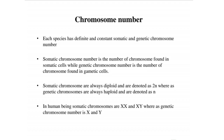Somatic chromosome number is the number of chromosomes found in somatic cells. Somatic chromosomes are always diploid and are denoted as 2N. Gametic chromosomes are always haploid and are denoted as N.